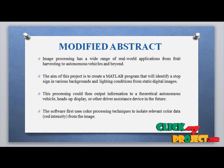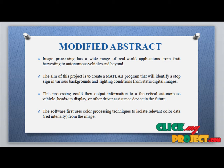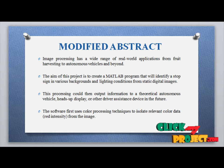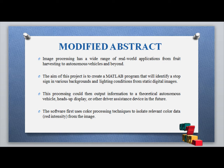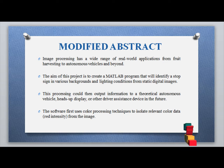Image processing has a wide range of real-time applications, from food harvesting, autonomous vehicles and beyond. The aim of this project is to create a MATLAB program that will identify stop signs and various backgrounds in lighting conditions from static digital images. This processing would then output information to a theoretical autonomous vehicle heads-up display and other driver assistance devices in the future.